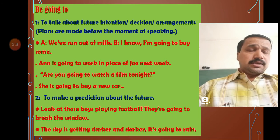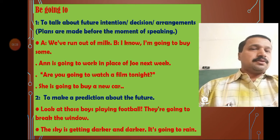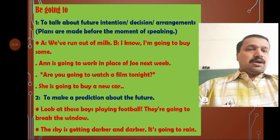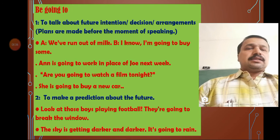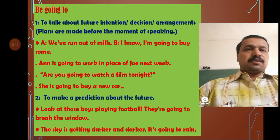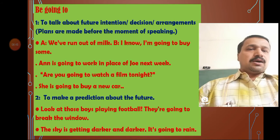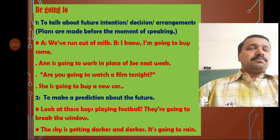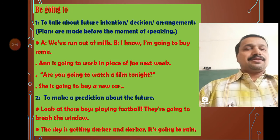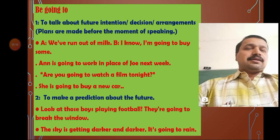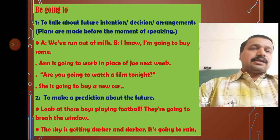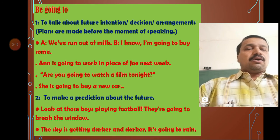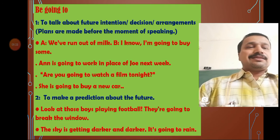Are you going to watch a film tonight? — we have a plan to watch a film tonight. She is going to buy a new car — she has a plan to buy a new car. The next use of going to is to make a prediction about the future. Look at those boys playing football — they are going to break the window. Something that may happen, because they have a history of breaking windows. The sky is getting darker and darker — it is going to rain. So there is a possibility of rain — the chance is stated using going to.